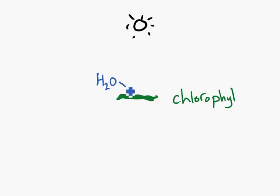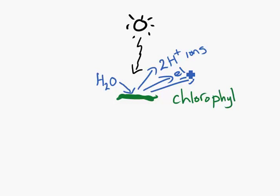Water, when it hits chlorophyll that's got the sun on it, breaks in half. We get two hydrogen plus ions (H+) and electrons broken off.